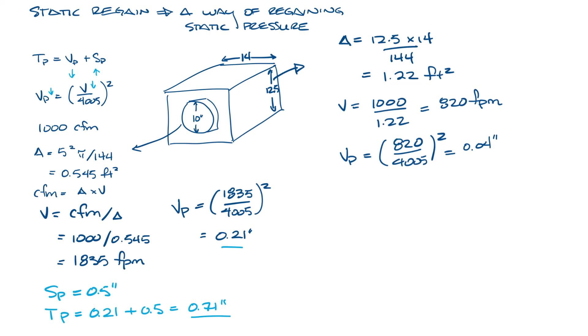Now in the rectangular section of the box, to keep it simple, we'll ignore any pressure loss across the box right now. And so we have the same total pressure of 0.71. So the static pressure is 0.71 minus 0.04, which equals 0.67 inches. So we had half an inch of static at the inlet and now we have 0.67 inches of static at the discharge. We regained static pressure.